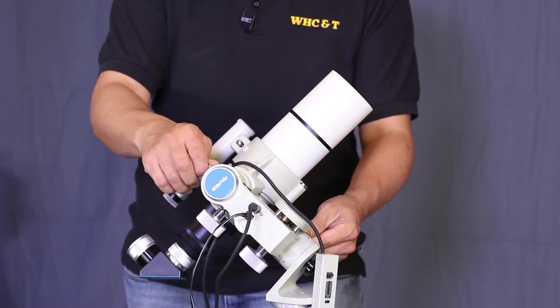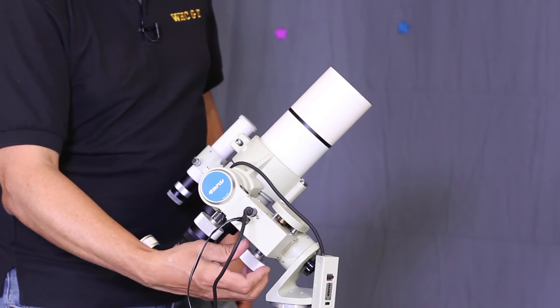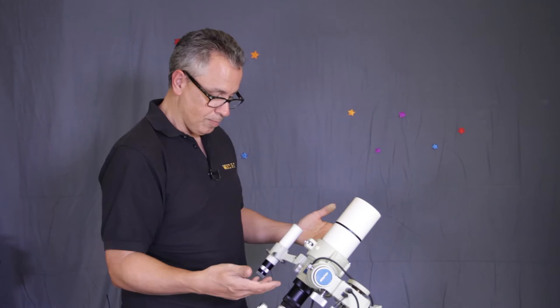I can just simply loosen the clutches or I have these slow motion controls. If you'll notice here, I'm just moving this one here to adjust the altitude motion and then this slow motion control here to move your right ascension right here.